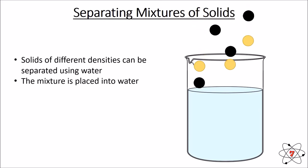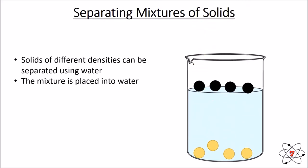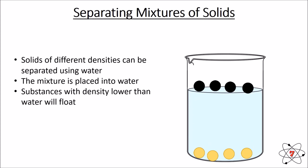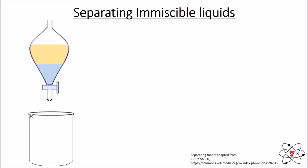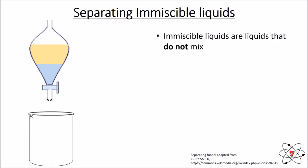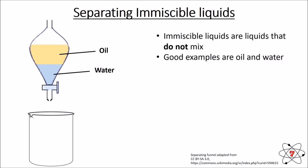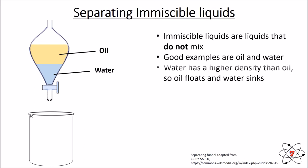If we have solids of different densities we can separate them using water. We place our mixture into water and substances with lower density are likely to float, while substances with greater density than water are going to sink. So we have separated our mixture based on density.